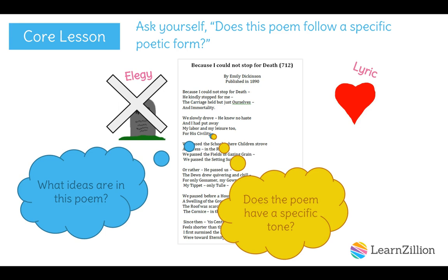What about a lyric poem? Lyrics are relatively short and written about a deep emotional feeling or idea. The tone of a lyric depends on the subject — it might be enthusiastic, passionate, angry, or joyous. 'Because I Could Not Stop for Death' does share a deeply personal idea about death, and its tone — relaxed, peaceful, and steady — matches the author's feelings. It is also a relatively short poem. So, maybe it's a lyric poem.